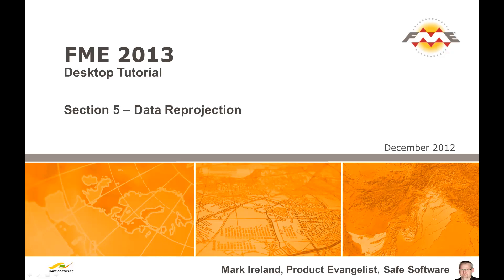This movie is the last in a series of five that demonstrate the basic use of FME Desktop as a tool for data translation and transformation. Each movie covers the content from one chapter of the FME Desktop tutorial. This chapter covers the basics of how to reproject data from one coordinate system to another. The examples included in this movie also show the basics of how to handle multiple source files by using a dynamic schema.